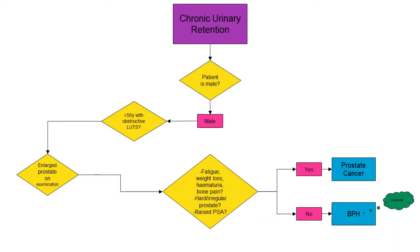We start on the flowchart looking at whether the patient is male. Going down the route of yes, they are male — they're over 50 with obstructive lower urinary tract symptoms. This includes hesitancy, dribbling at the end of passing urine, and general difficulties with the stream of passing urine. They also have an enlarged prostate on PR examination.